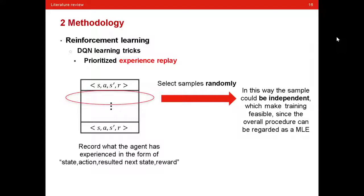And then, during training process, we select samples randomly in the pool. In this way, the sample could be independent, which may train better, since the overall procedure can be regarded as a maximum likelihood estimation.